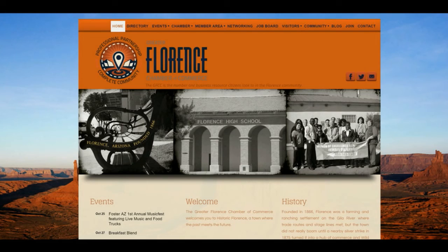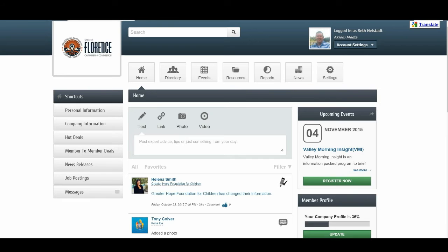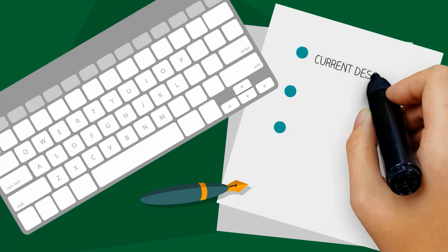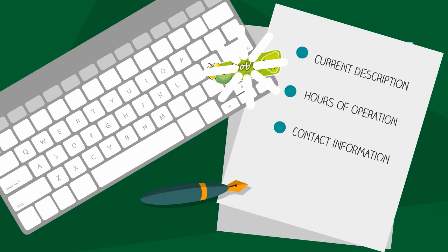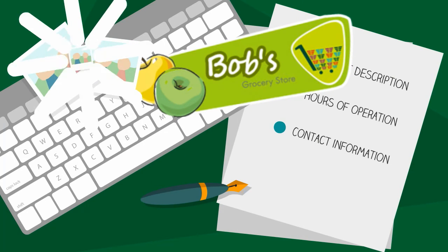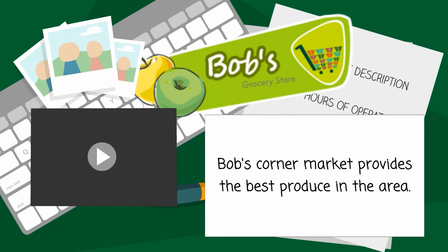Additionally, Bob can log in to the Member Information Center to manage his online business profile on the chamber's website. Here he can update his directory listing with a current description, hours of operation, and contact information. He can make his listing stand out by adding his logo, additional photos, video, and an expanded description.